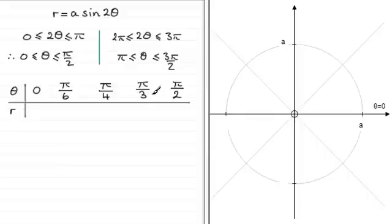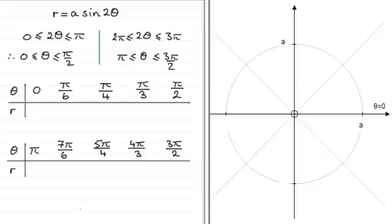And if we take for this interval here, pi to 3 pi over 2, we draw up another table. I've taken pi, 7 pi over 6, 5 pi over 4, 4 pi over 3, and 3 pi over 2.